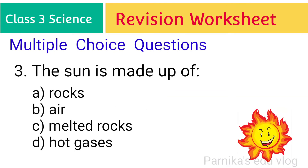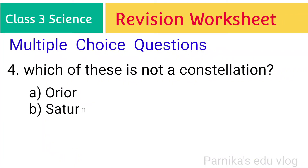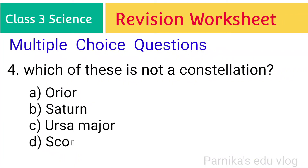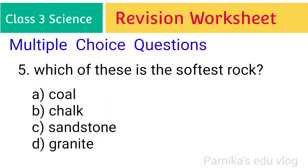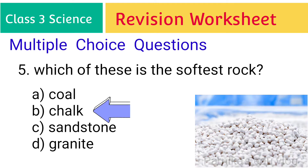Third one: the sun is made up of? The answer is hot gases. Fourth one: which of these is not a constellation? The answer is Saturn. Fifth one: which of these is the softest rock? The answer is chalk.